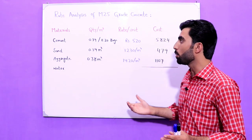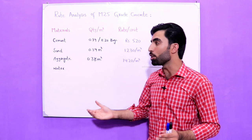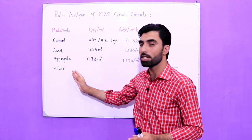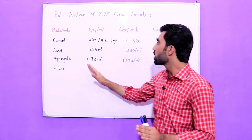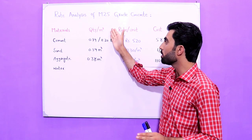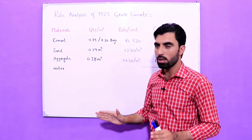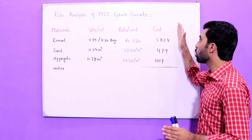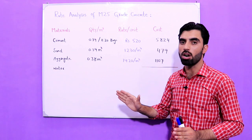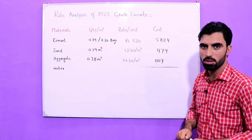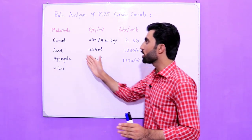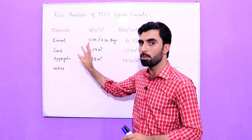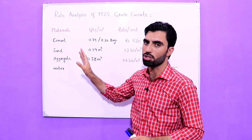In concrete we have different materials: cement, sand, aggregate, and water. In the next column you can see quantity per meter cube, the third column is rate per unit, and the last column is total cost — the cost per item.